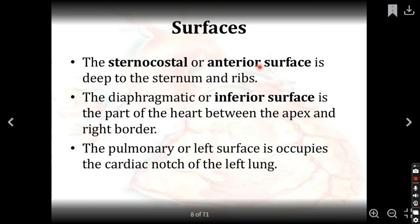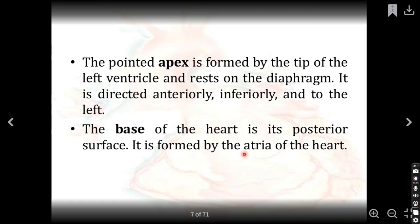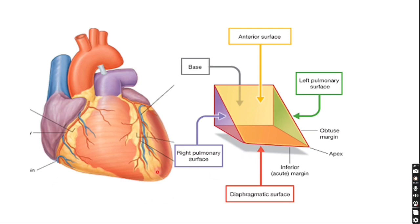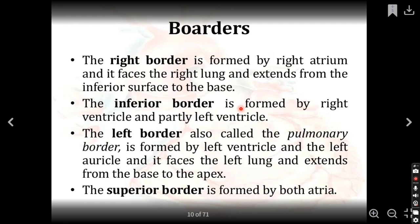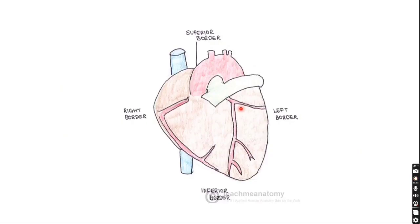The five surfaces are: first, the sternocostal or anterior surface — formed by the sternum and ribs (costal). Second, the diaphragmatic or inferior surface. Third, the pulmonary or left surface. Fourth and fifth, the apex and base — the apex is formed by the tip of the left ventricle and lies on the diaphragm, while the base is the posterior surface.